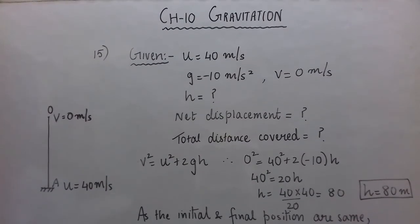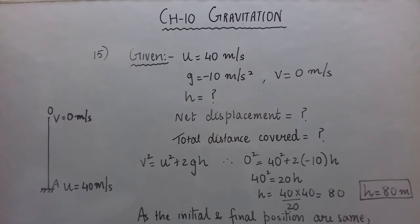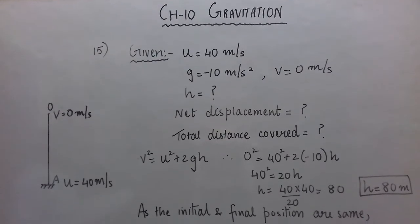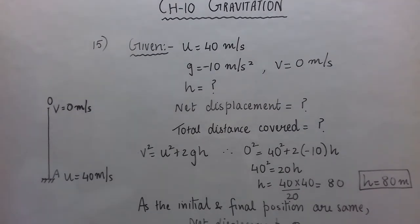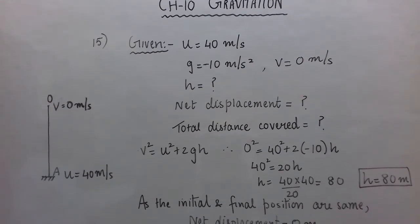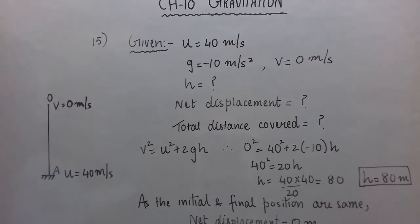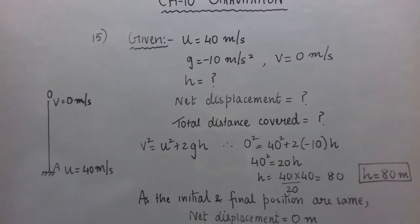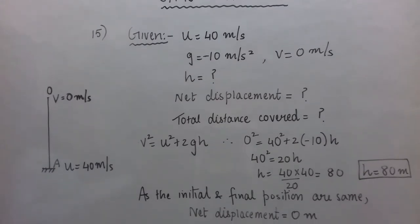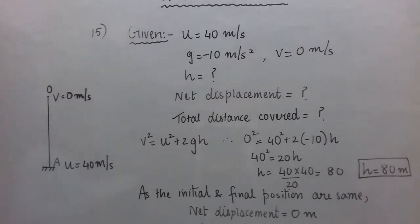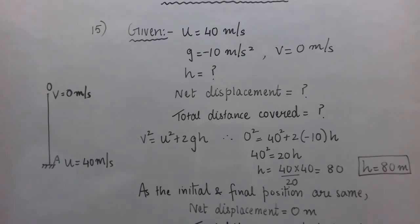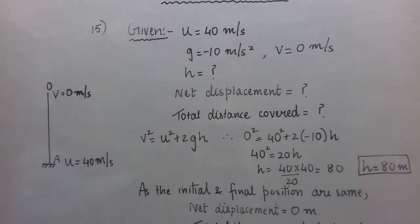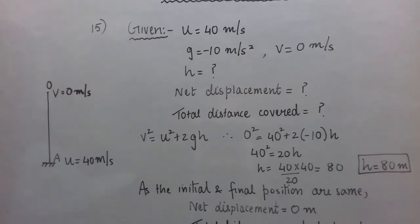15th question: A stone is thrown vertically upward with an initial velocity of 40 meter per second. Taking g equal to 10 meter per second square, find the maximum height reached by the stone, the net displacement, and the total distance covered by the stone.